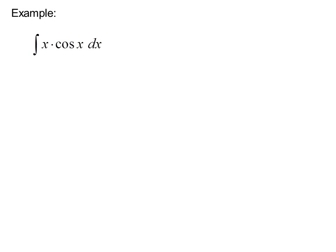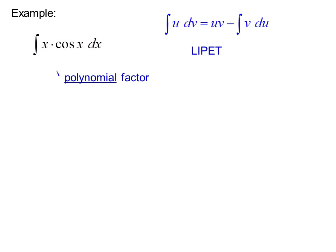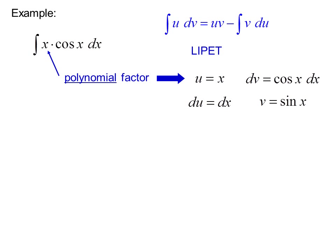Example: the integral of x times cosine x dx. Because the integrand is a product, we try integration by parts. The formula is the integral of u·dv equals u·v minus the integral of v·du. Using LIPET, x is a polynomial factor, which comes before trig, so we let u equal x. What's left will be dv, so dv equals cosine x dx. Taking the derivative, du equals dx.